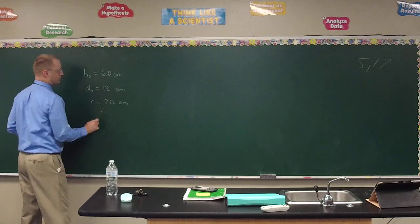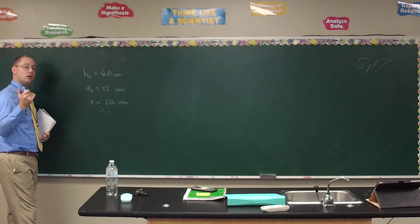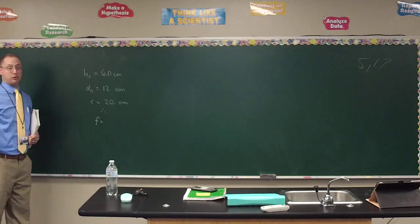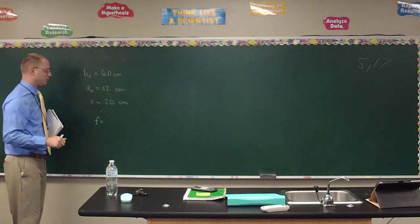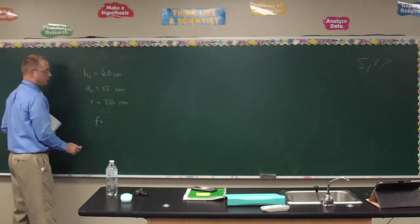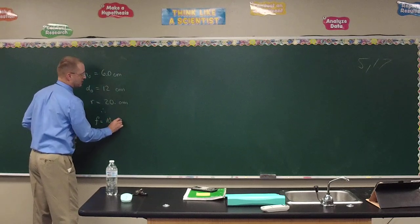The purpose of the radius is to allow us for a mirror to get the focal length. For a lens, focal length depends on both radii of curvature and index of refraction, but for a mirror, focal length is half the radius of curvature. So the focal length here is 10 centimeters.